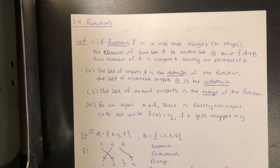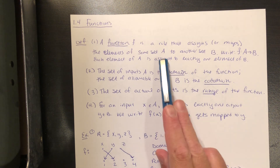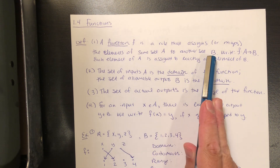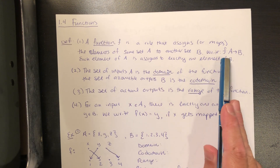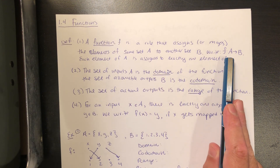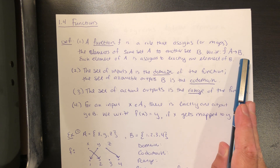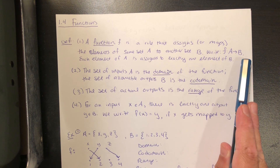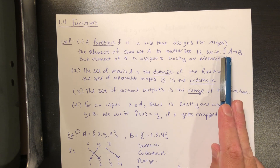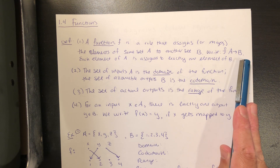If we're saying that F is assigning elements of A to elements of B, then we write that F is a function from A to B. That's how we would read this: F is a function from A to B, written as F colon A arrow B.